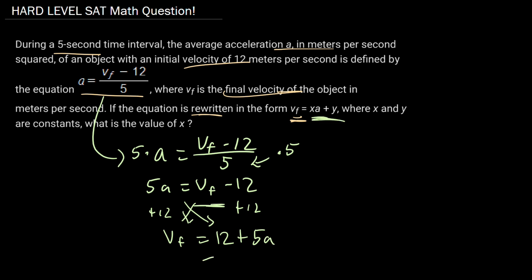Now, we want this in this form, so we can just rewrite this, simply switch the order. It's the commutative property: 5a plus 12.